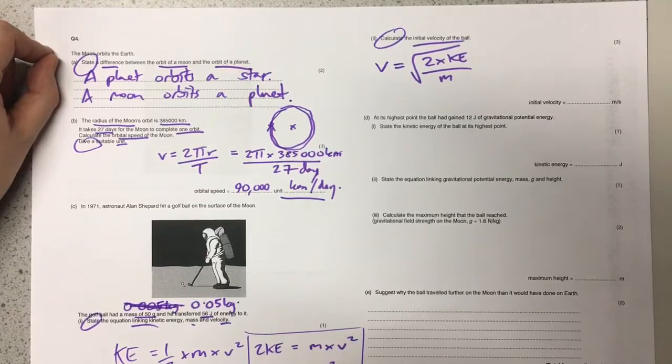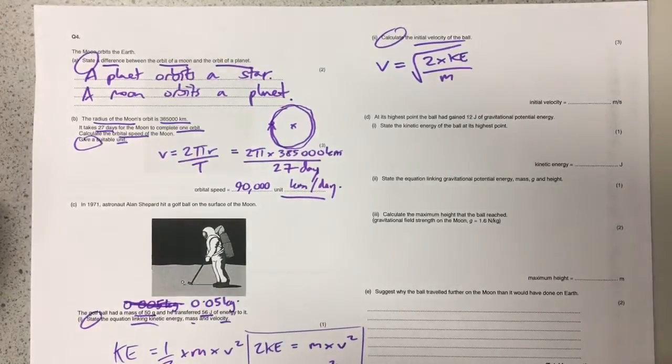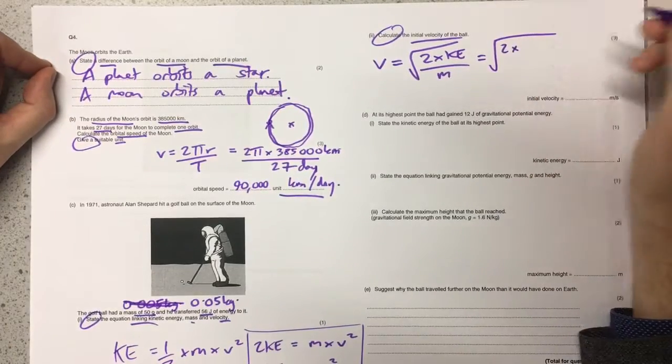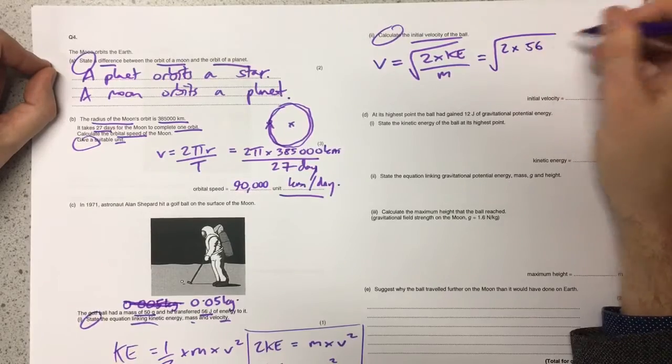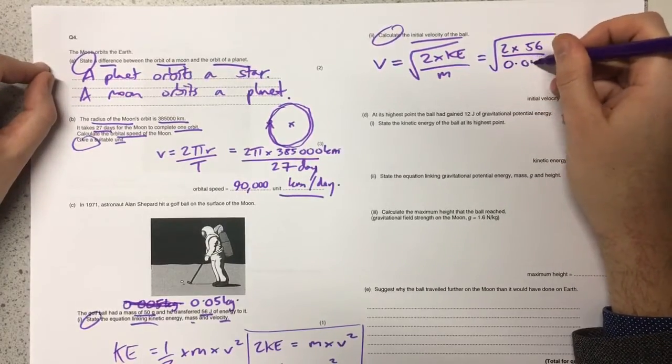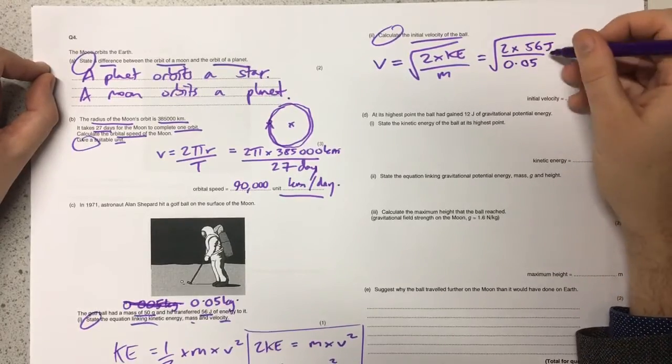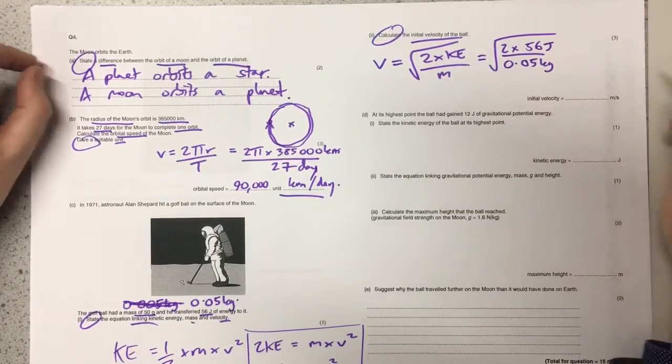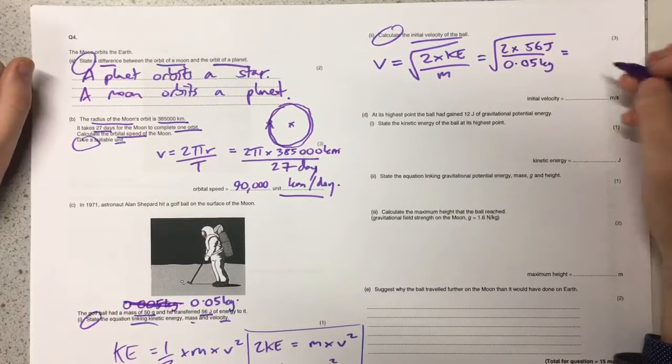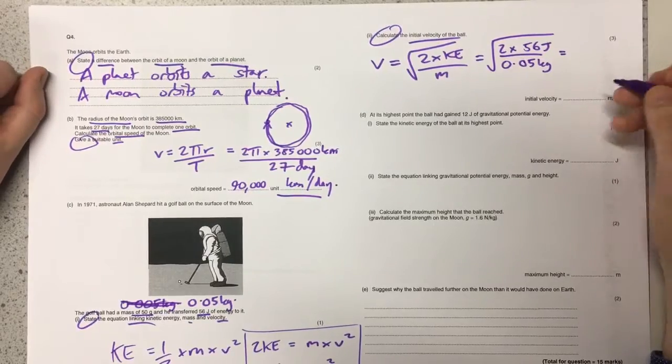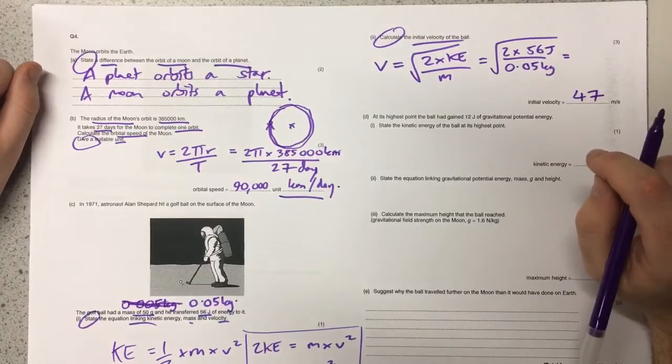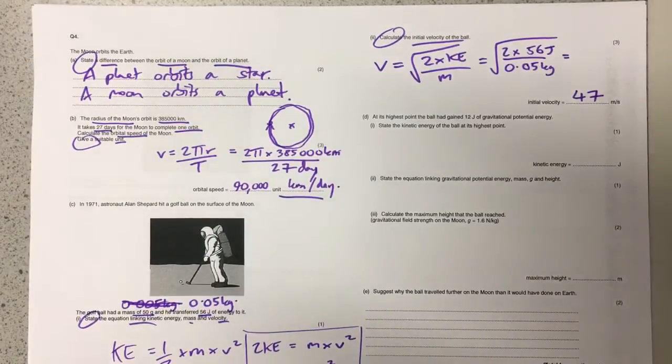Now we need to do is substitute all the values into the equation. The kinetic energy was 56 joules and the mass, being very careful to make sure that I've correctly changed it into kilograms rather than grams, otherwise I'm going to get it wrong. Then if I put that all into the equation, I'm going to get about 47 meters per second.